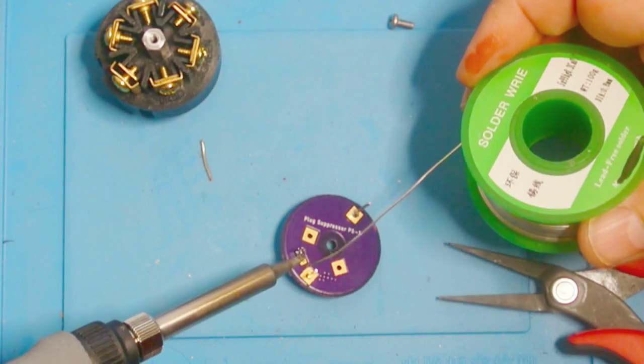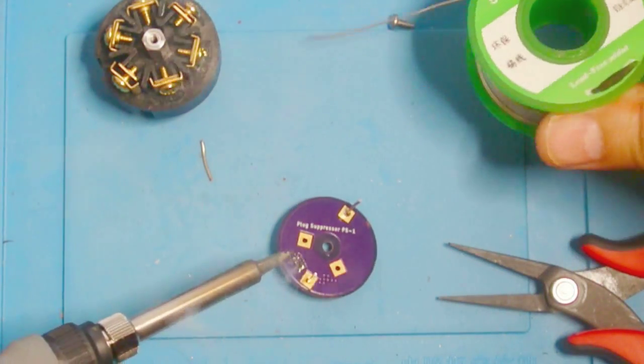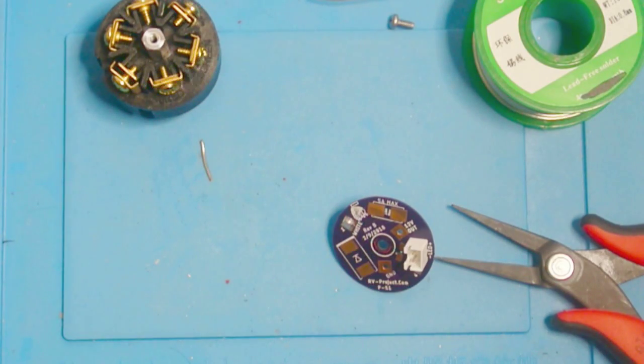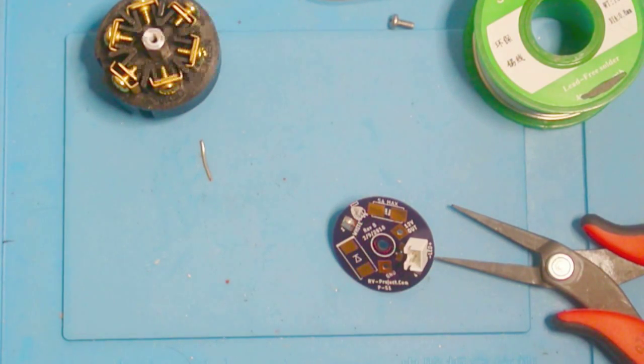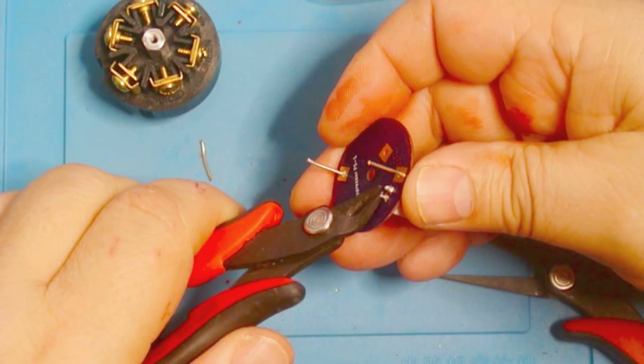If you do blow the fuse, you may want to take and replace the fuse. Since we don't have a whole lot of clearance, I do want to cut the ends of this connector off.